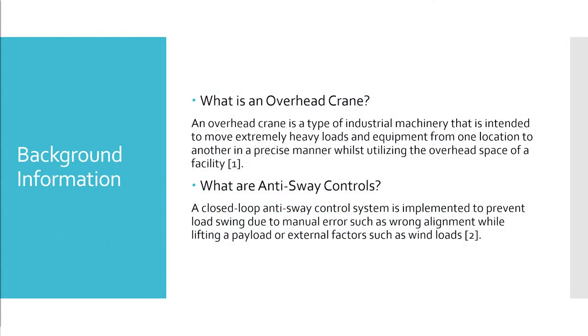Let us begin by talking about what an overhead crane is. An overhead crane is a type of heavy-duty machinery that is used to move extremely large loads from one location to another in a precise manner. An overhead crane utilizes the overhead space in a facility to serve as a means for unloading, loading, moving materials, lifting dies from stamping machines, or feeding raw materials.